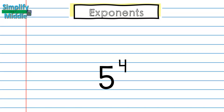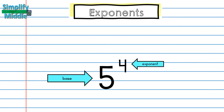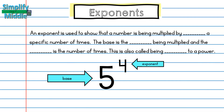We'll start off by looking at an example of what an exponent is. Here we have 5, which is called our base, and then a small 4 in the upper right hand corner. This is called our exponent. An exponent is used to show that a number is being multiplied by itself a specific number of times. The base is the factor being multiplied, and the exponent is the number of times. This is also called being raised to a power.